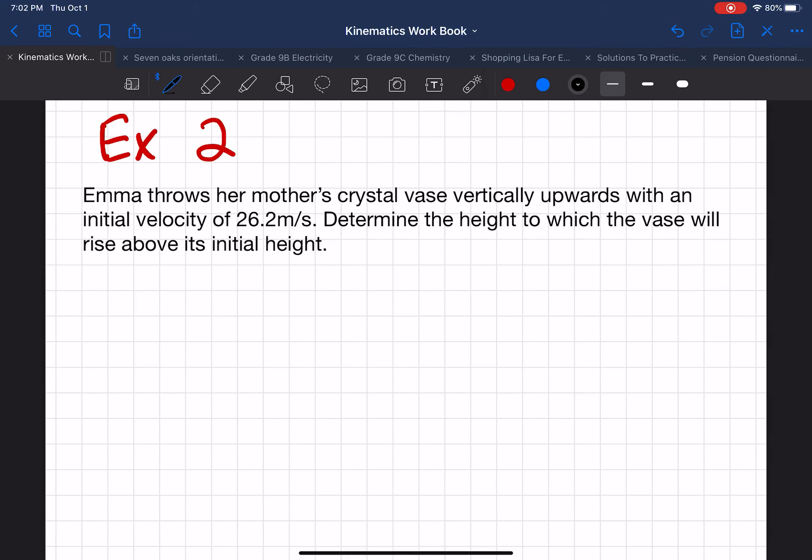Emma throws her mother's crystal vase vertically upwards with an initial velocity of 26.2 meters per second. Determine the height to which the vase will rise above its initial height. Emma better catch that, or is she getting in trouble?